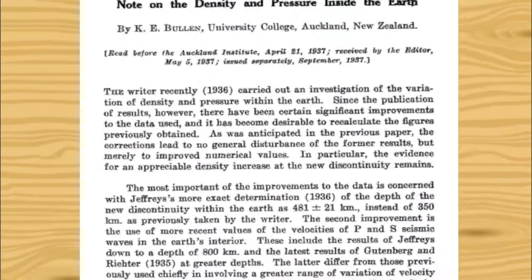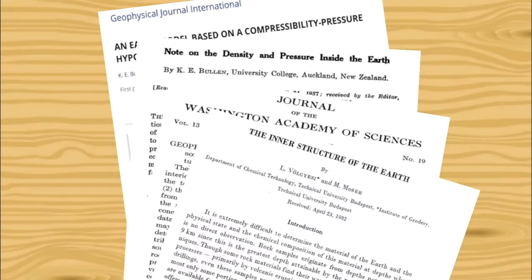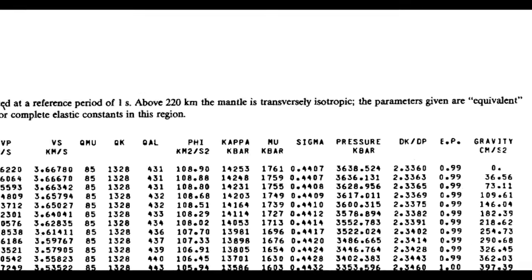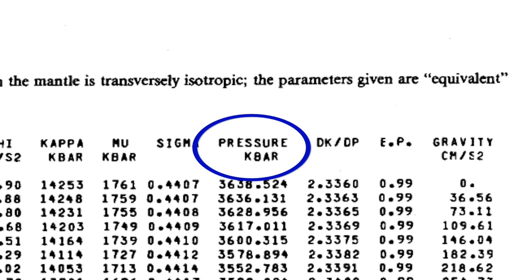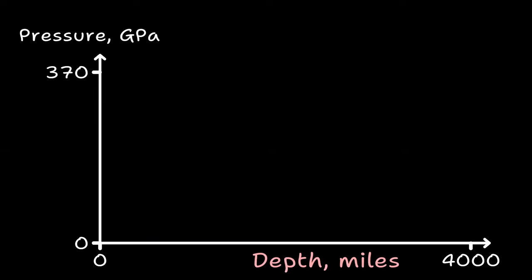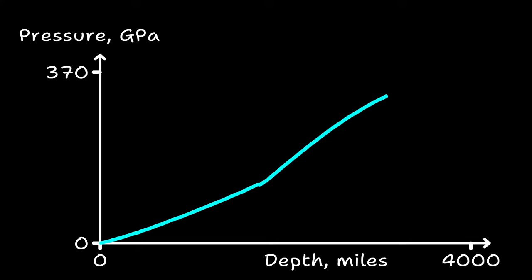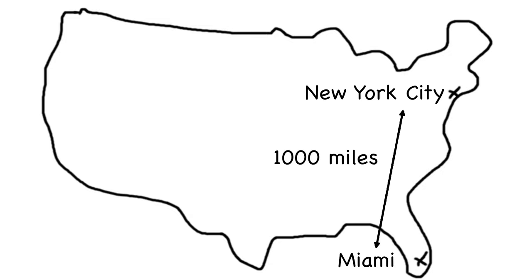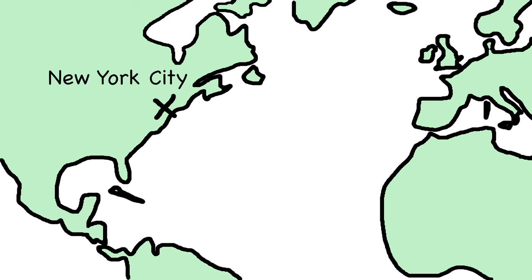There are papers that use seismic measurements to determine the conditions at various depths. The Preliminary Earth Reference Model, or PREM, by Dziewonski and Anderson 1980, provides tables of pressure at different depths. PREM is widely cited and used. Let's put this data onto a graph. I'll put depth in miles on the x-axis and pressure in gigapascals on the y-axis. As we move from the surface of the Earth on the left, towards the center on the right, the pressure increases. Let's add some meaning to these numbers. 1,000 miles is the distance between New York City and Miami.